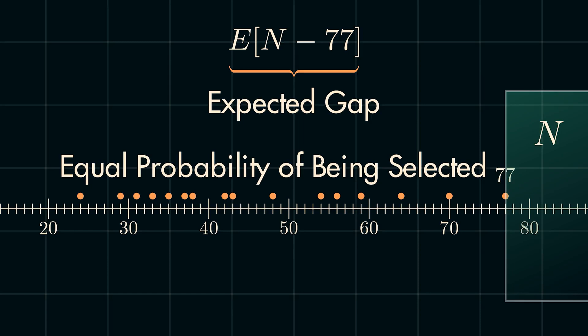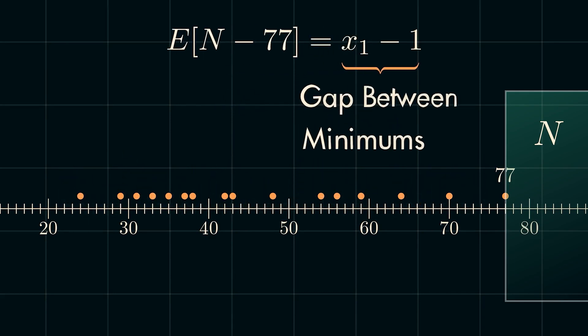This means that we could estimate n minus 77 with x1 minus 1, where x1 minus 1 represents the gap between the sample minimum and the minimum of the population.